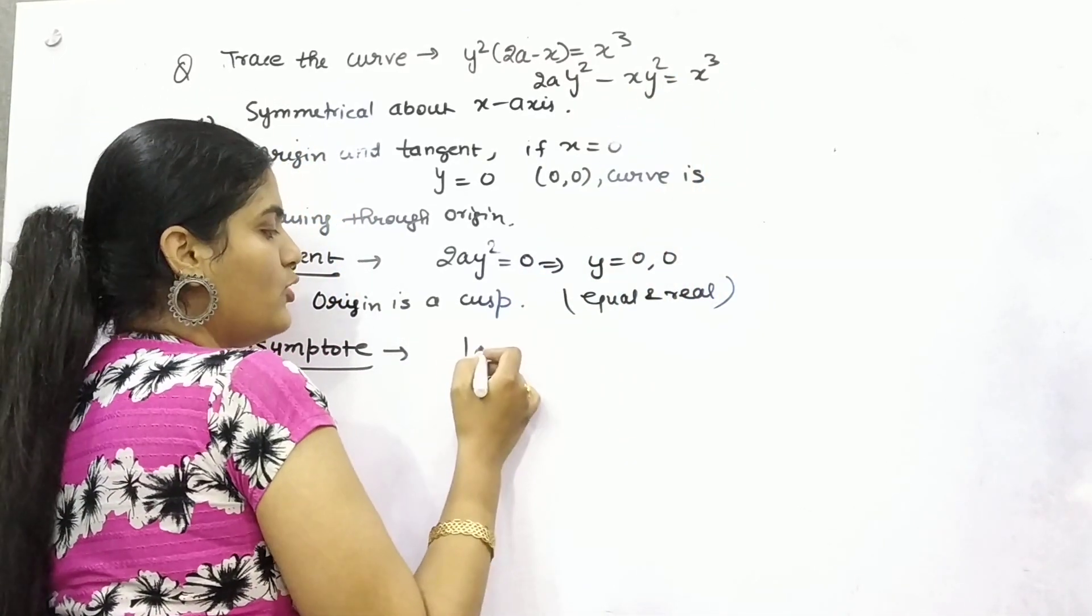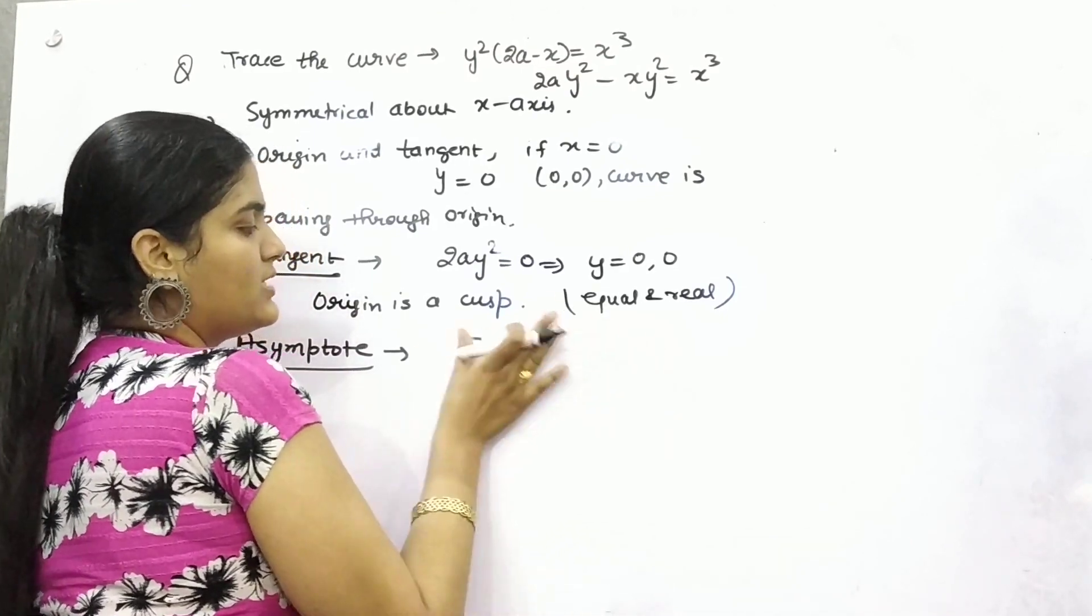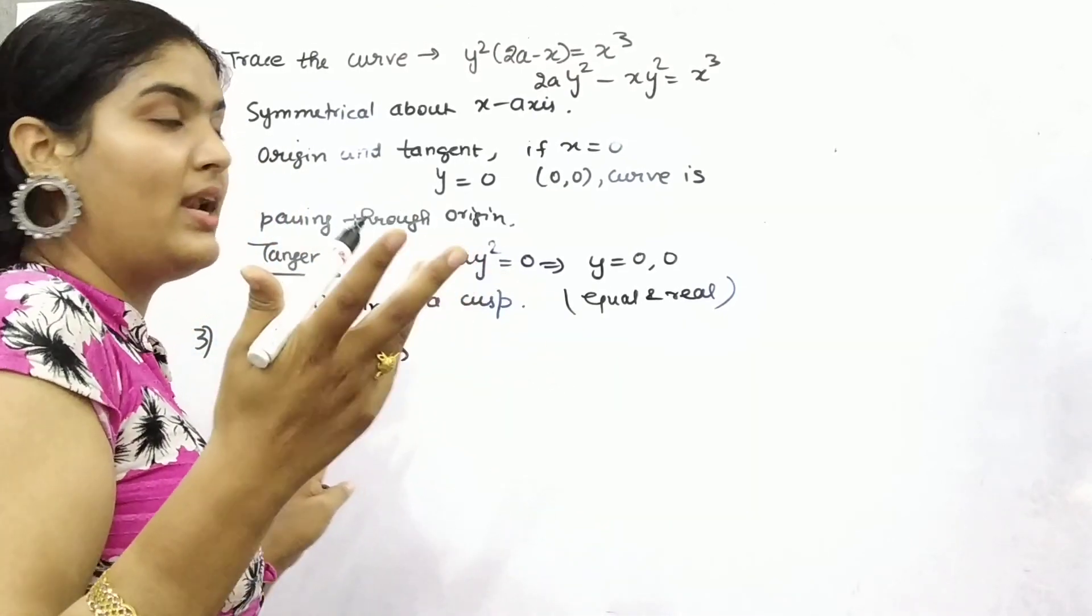So x³, coefficient is 1. How can you put 1 as 0? So there is no asymptote along x, I mean parallel to x-axis.